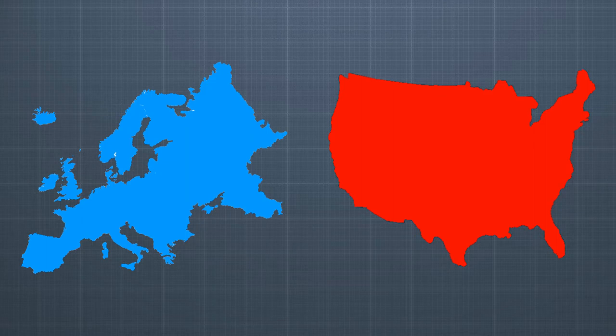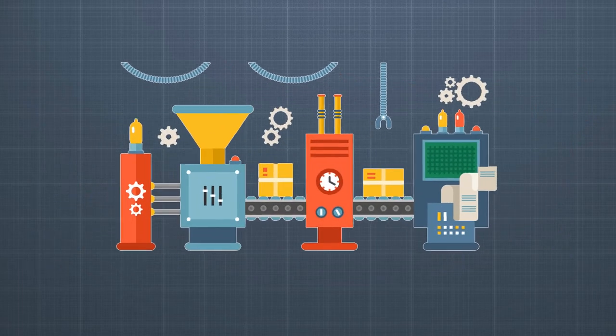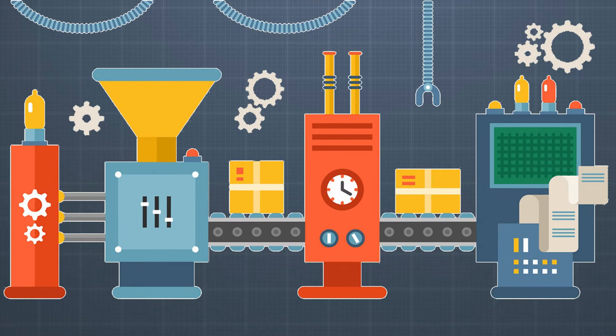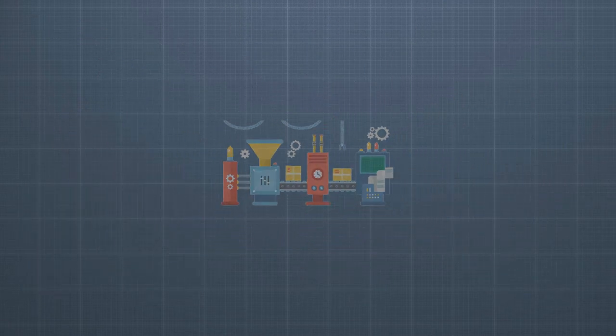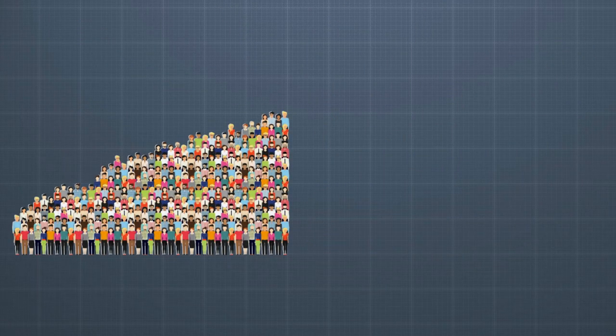The transition involved moving away from most hand production methods. The new change was the implementation of machines, new chemical manufacturing processes, new iron manufacturing processes, the increasing use of steam power and water power, the development of machine tools, and the upbringing of the mechanized factory system. The Industrial Revolution also led to an unexpected rise in the rate of population growth.